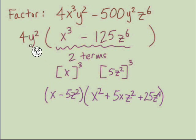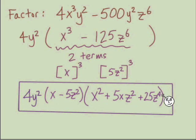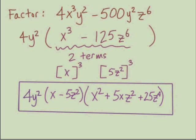Don't end it before remembering the GCF though. The 4y² is out front, combined with the result from using the cubes pattern — that is our final answer, factored completely.